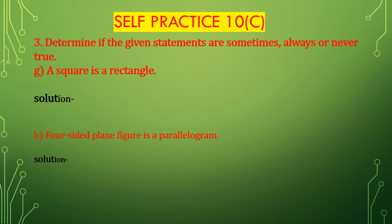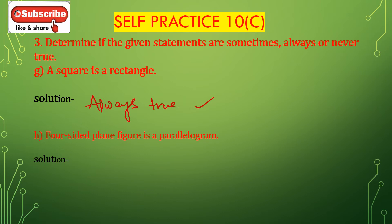Bit G: a square is a rectangle. A square is a rectangle — it has four equal sides, so this is always true. Bit H: a four-sided plane figure is a parallelogram. A four-sided plane figure is a parallelogram — this is sometimes true.